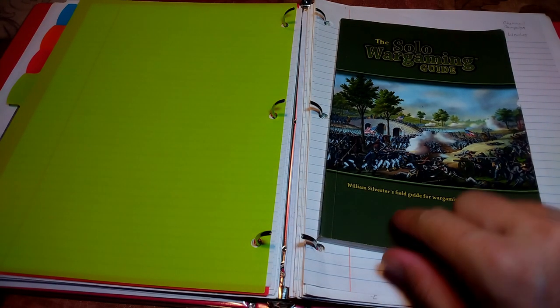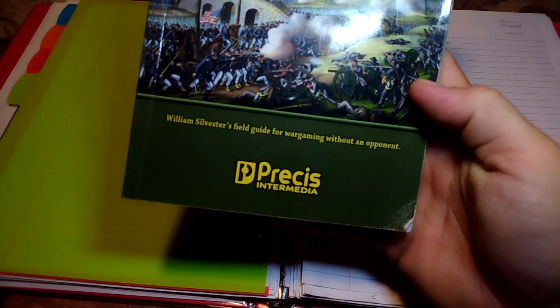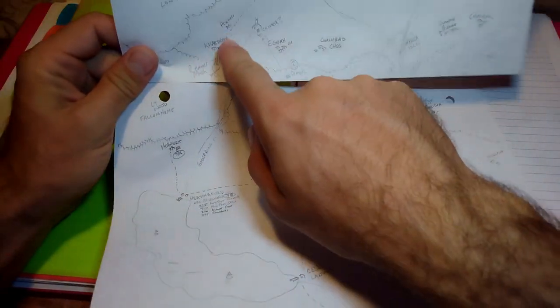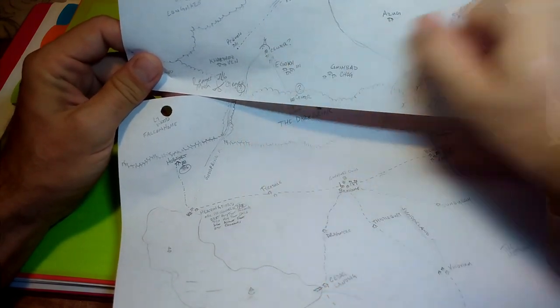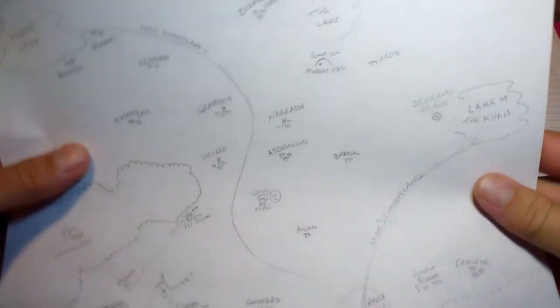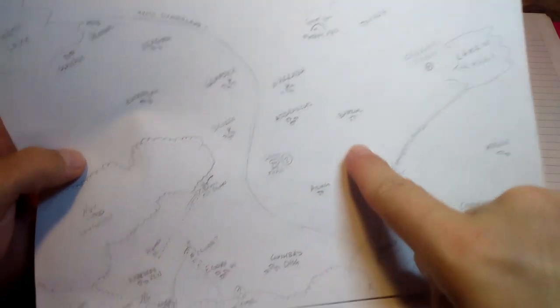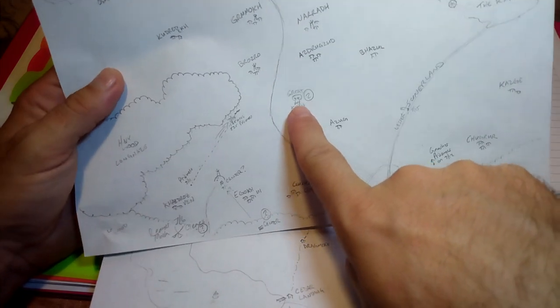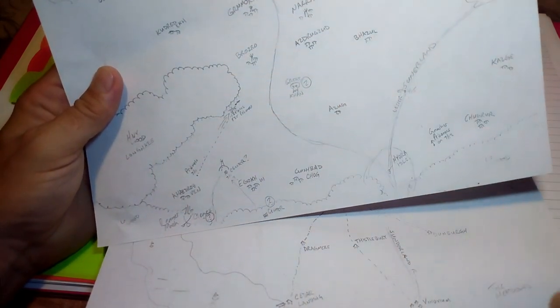Solo Wargaming, the William Sylvester way. We're using William Sylvester's Field Guide for Wargaming Without an Opponent to conduct a human orcish map-based campaign. We're going to try to advance the clock to July 15th.